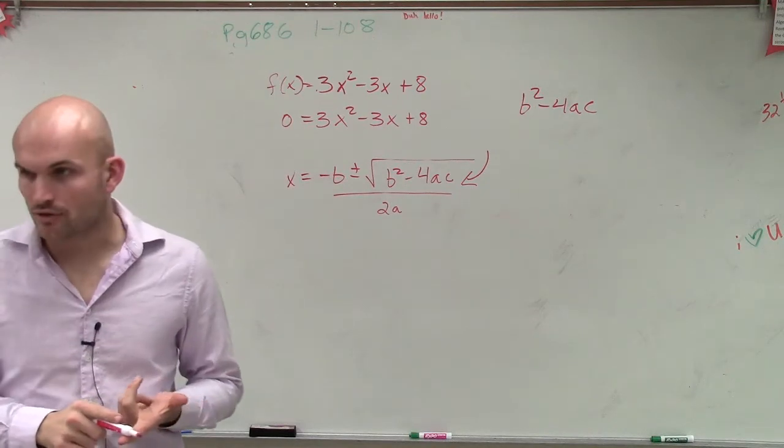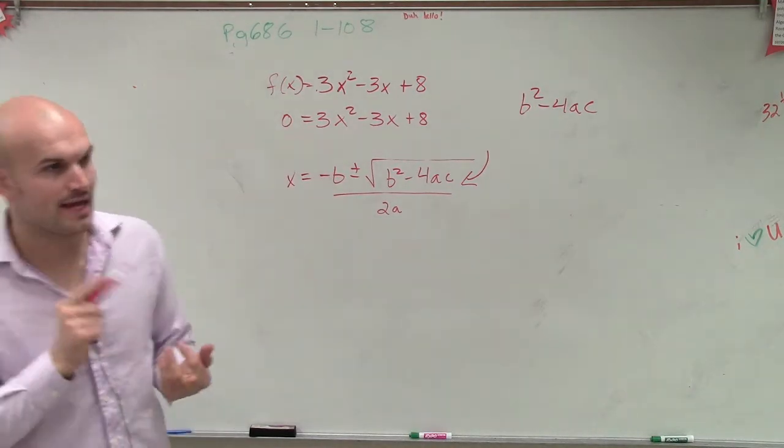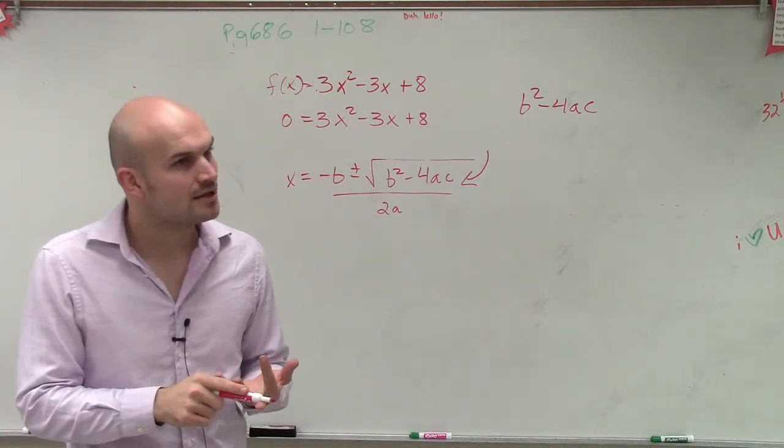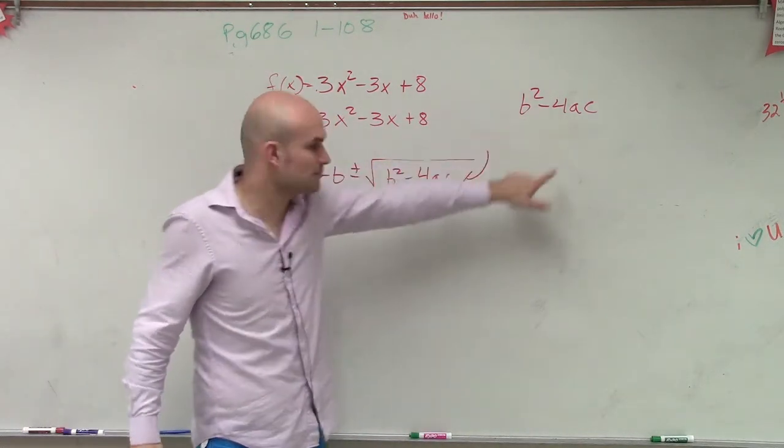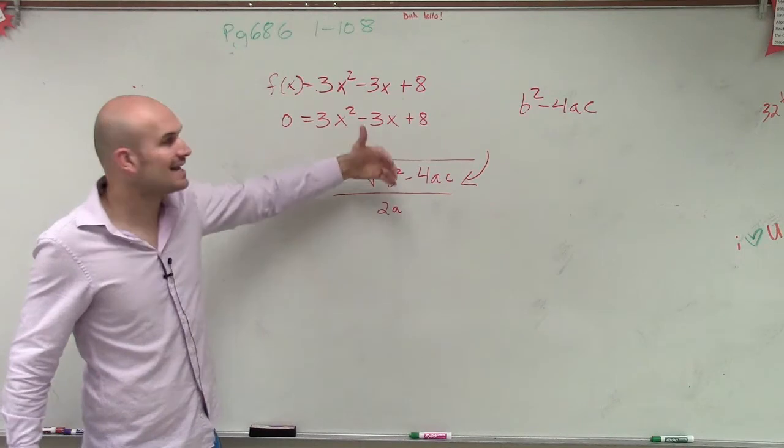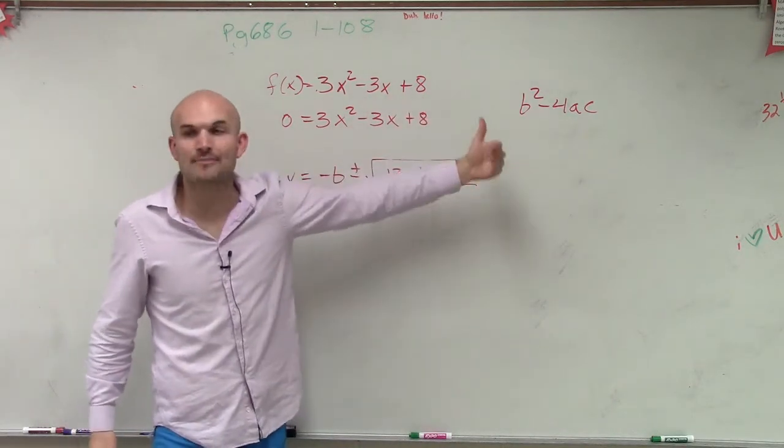Are my zeros real? Are they rational? Are they imaginary, complex? Are they irrational? So just by looking at what this value is, which is under my square root, I can now determine the nature and how many roots I have.